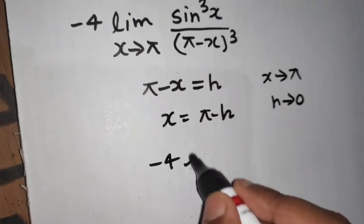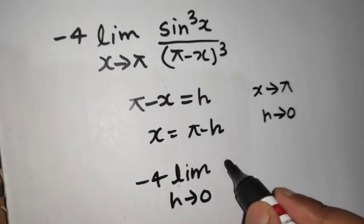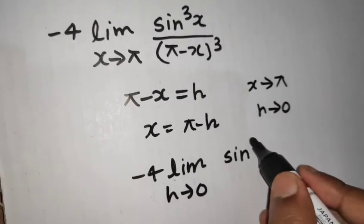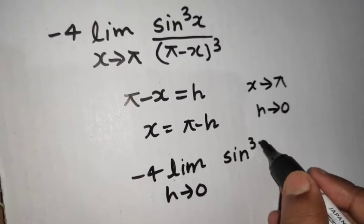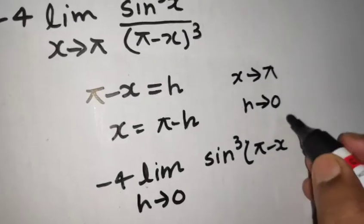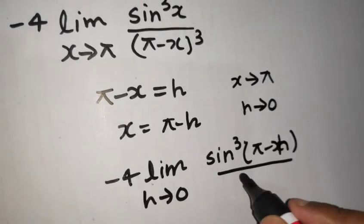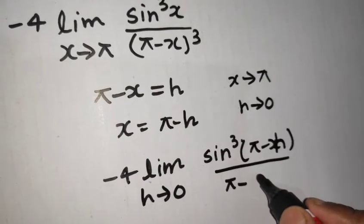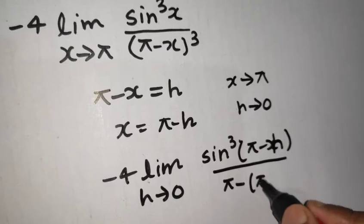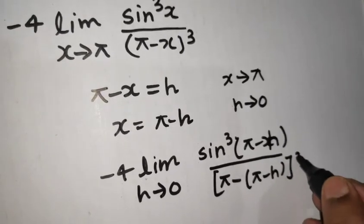So my problem now transforms to minus 4 times limit h tending to 0. Sin cube of in place of x I can write pi minus h, and in denominator pi minus in place of x I can again write pi minus h and I have a whole cube here.